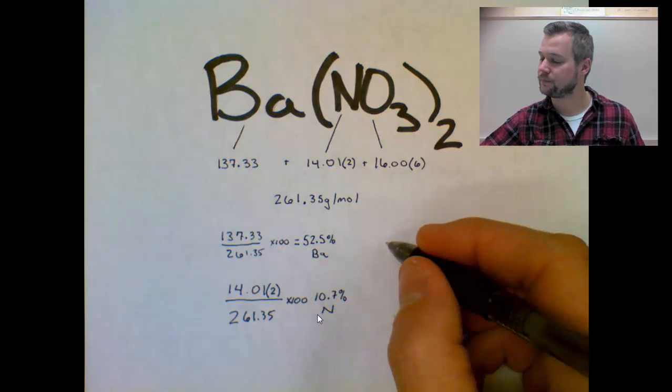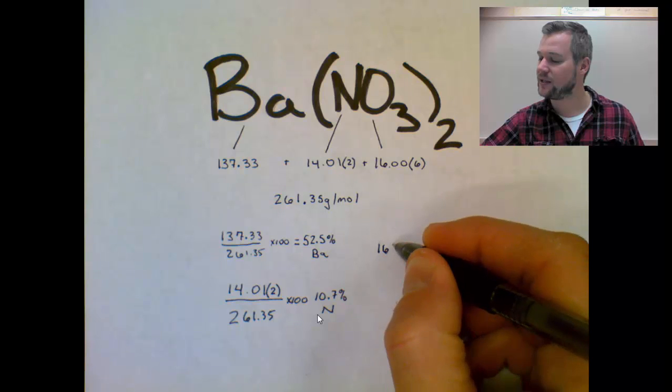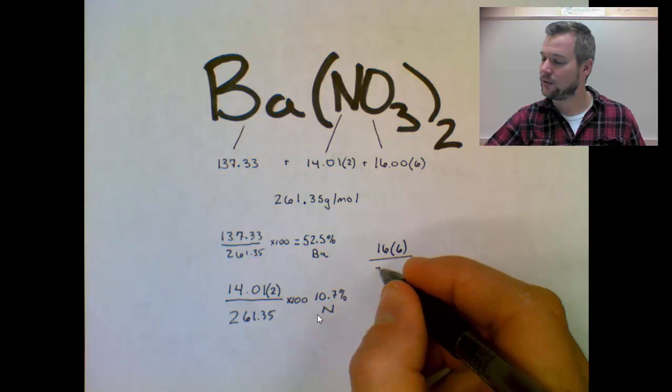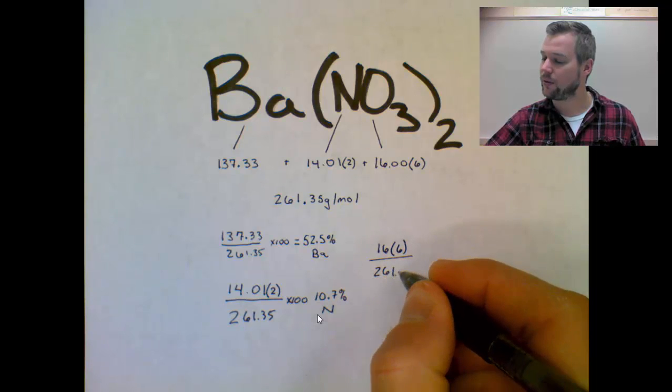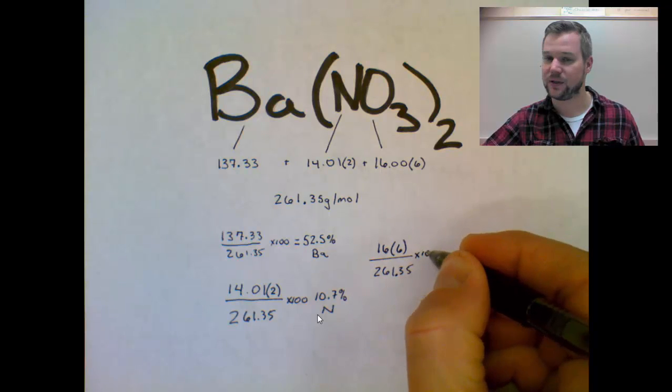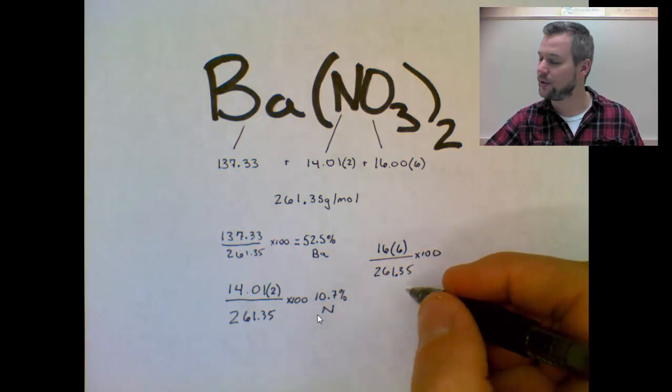Finally, the oxygen, 16 times 6, divided by 261.35 times 100 to make it into a percentage, and we end up with 36.7%.